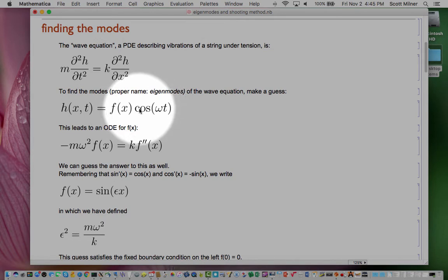But it's a good guess. So we insert that into the equation here, and the cosine gets two time derivatives taken of it, and the derivative of cosine is negative sine, and the derivative of sine is cosine, and each derivative pulls out a factor of omega when you do the chain rule, so that on the left, what you wind up with is minus m omega squared times the function f times the cosine. And on the right, the space derivative doesn't touch the cosine, it only touches the f, and so on the right, what you get is k times f double prime of x times the cosine.